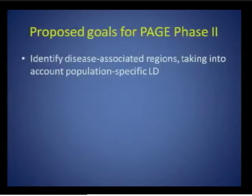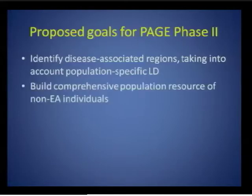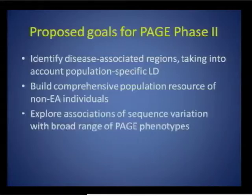The proposed renewal would conduct whole genome sequencing in approximately 2,000 individuals of non-European descent. The scientific goals would be: first, to identify disease-associated regions taking into account population-specific linkage disequilibrium; second, to build a comprehensive, publicly available population resource of non-European individuals, including sequence, phenotype, and association-level data; and third, to explore associations of sequence variation with the broad range of PAGE phenotypes available.